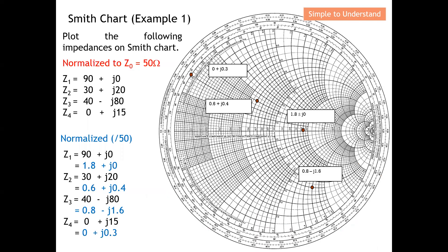Let's start by doing the first example on the Smith chart. Before we discuss adding series L or C, let's start with a simpler step: how to plot all the points onto the Smith chart. We have 4 points that are required to be plotted. The first thing we need to do is normalize them — typically, we normalize to 50 ohms before we can start to plot the points.